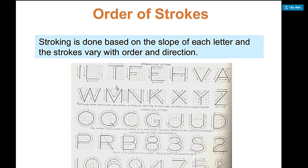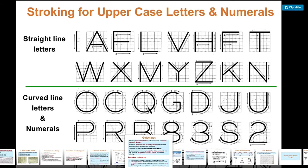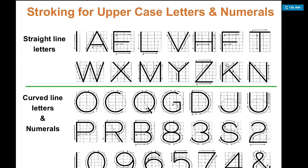Stroking is done based on the slope of its letter, and the strokes vary with order and direction. Look here, the letter O is very circular. There's also the oblong kind like zero in numbers. The letters are perfect and consistent because there's a graph. So for your plate number one, you need a graph. Make a graph first like this before lettering. Before lettering, you really need a graph.